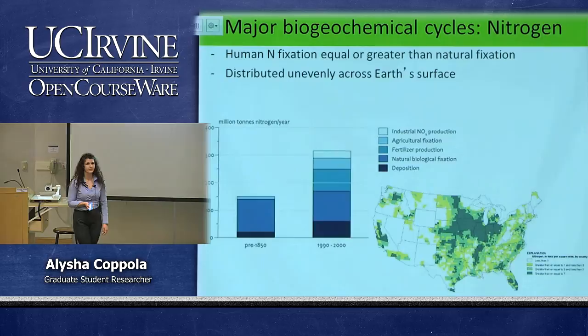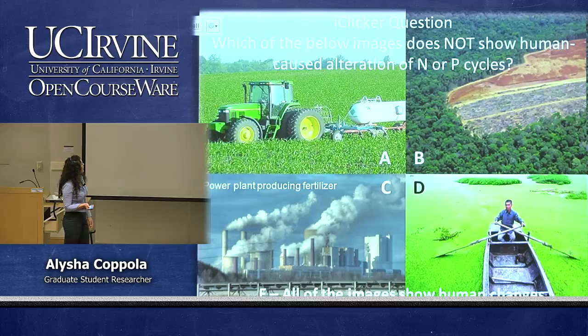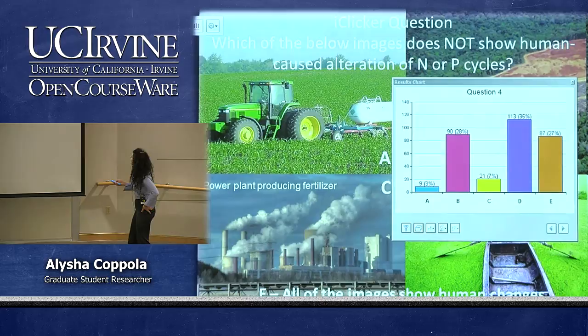The iClicker question asks which image does NOT show human-caused alteration of the nitrogen or phosphorus cycles. Looking at the results, E is the correct answer — all of them actually show human influences. Option D is an example of eutrophication, where excessive phosphate enters oceans, streams, or lakes.